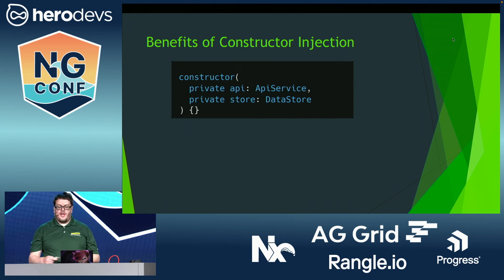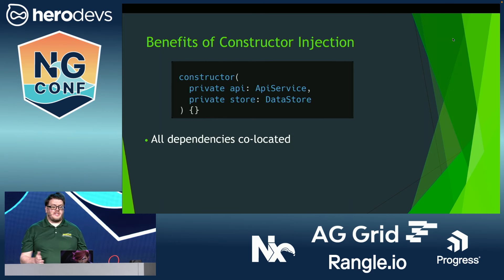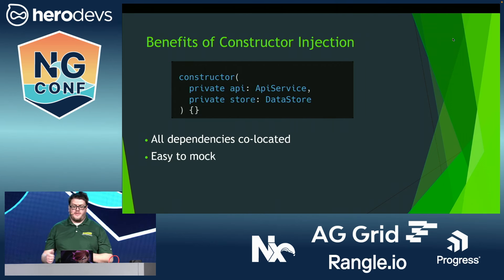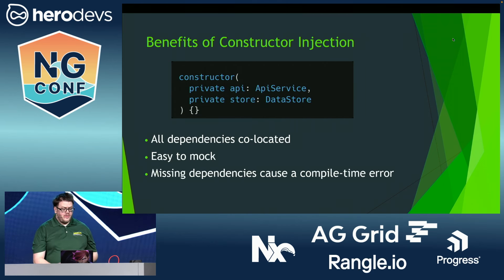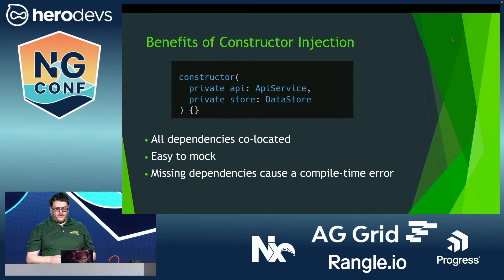Constructor injection is so named because all dependencies are provided through the constructor, which means that all of them are co-located, so it's easy to tell at a glance what a class depends on. It's easy to mock because you just pass the stubs as arguments to the constructor, and if you miss a dependency, it'll cause an immediate compile time error, as all parameters must be provided for it to compile at all.